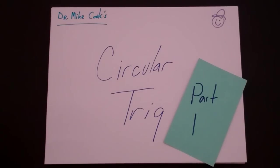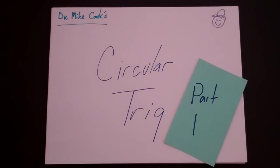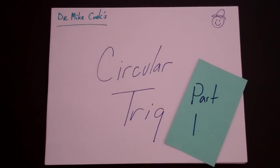This is the first in a series of videos on circular trig, and what we mean by circular trig is that basic trigonometry is always done in terms of right triangles.